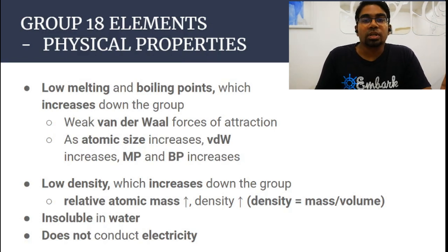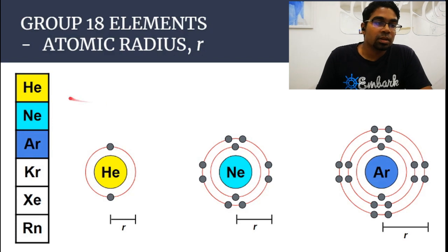Chemical properties are all about their reactions. Physical properties of Group 18 elements: generally all of them have low melting and boiling points. This is the reason they exist in gaseous state at room temperature and pressure. However, they have an increasing trend down the group.